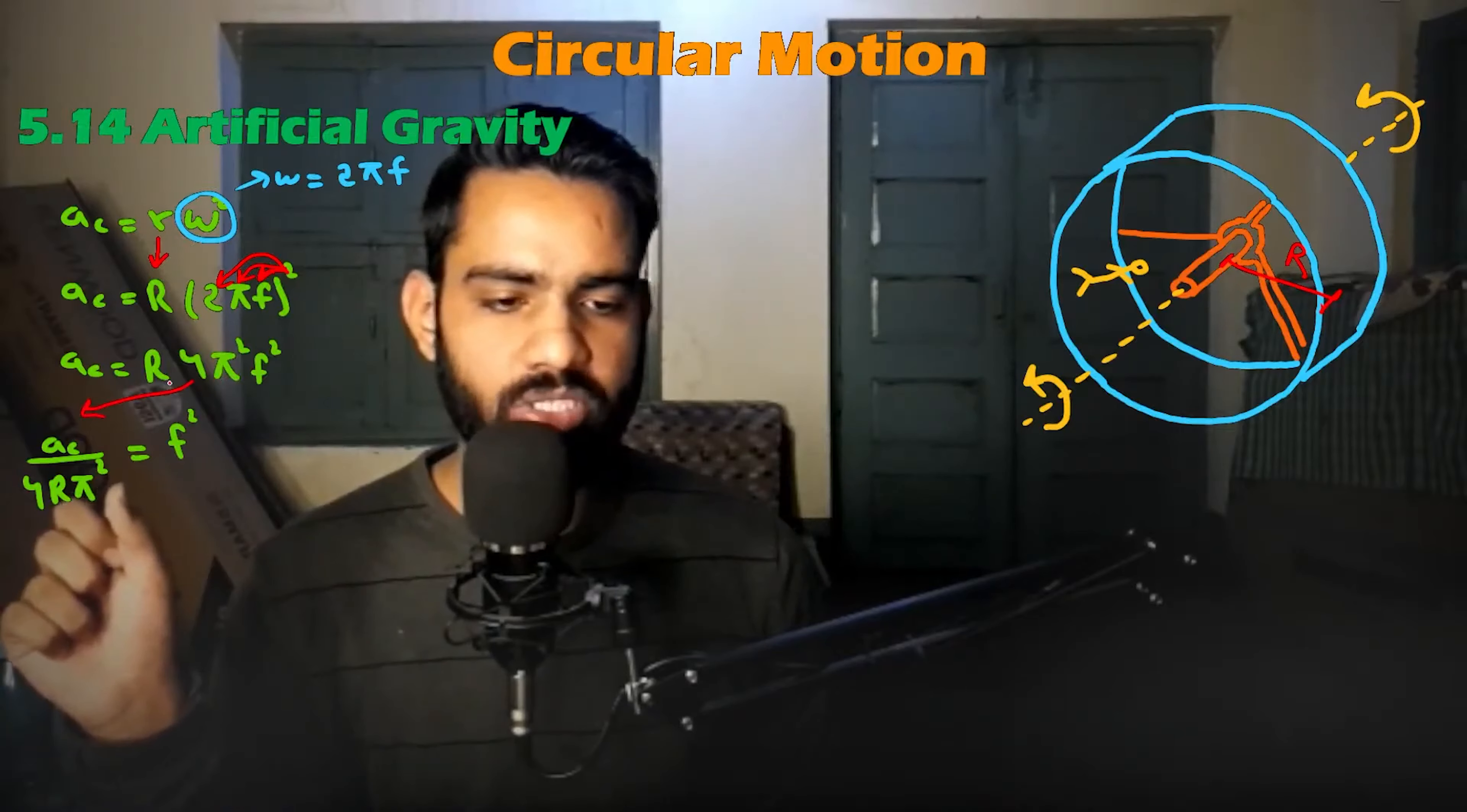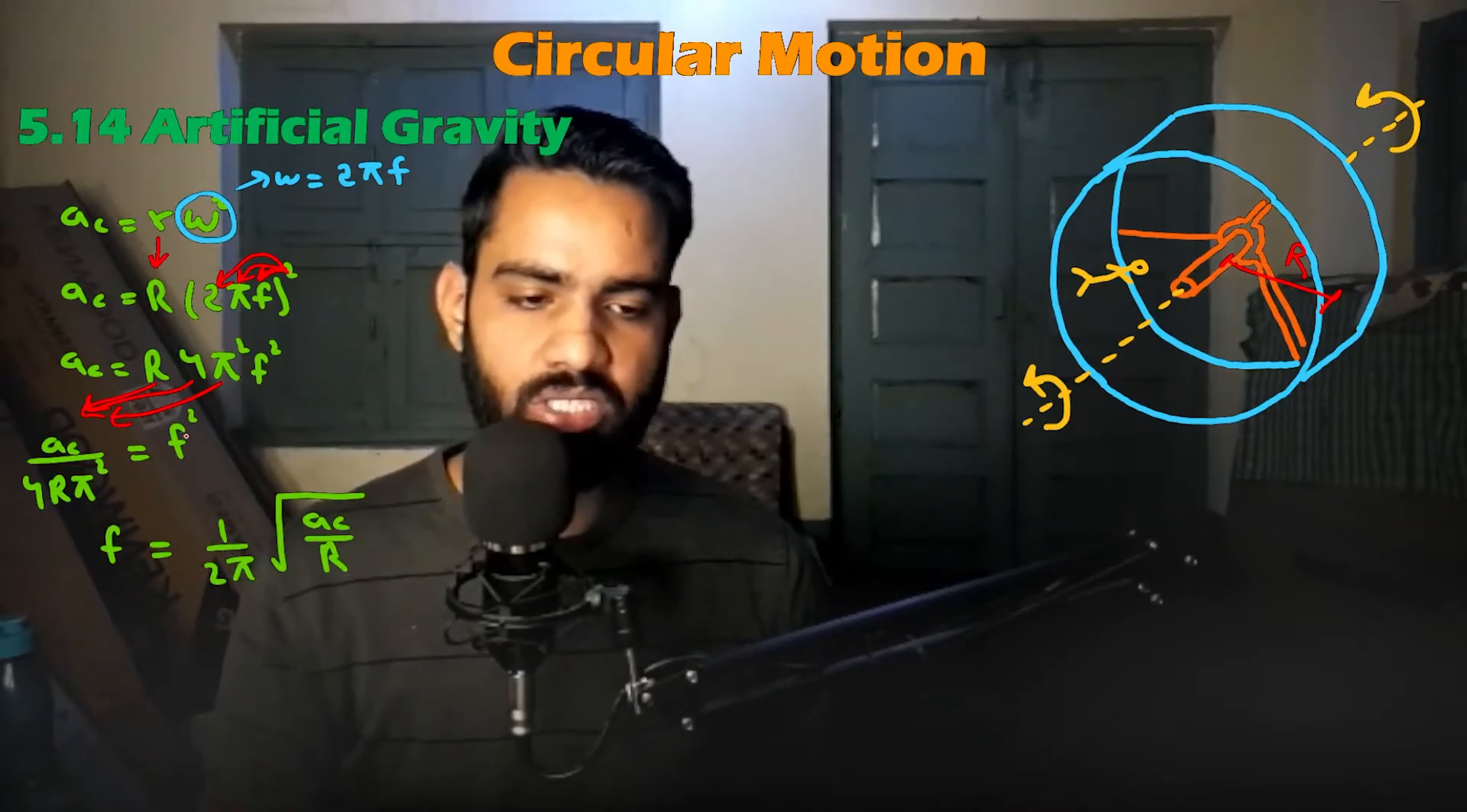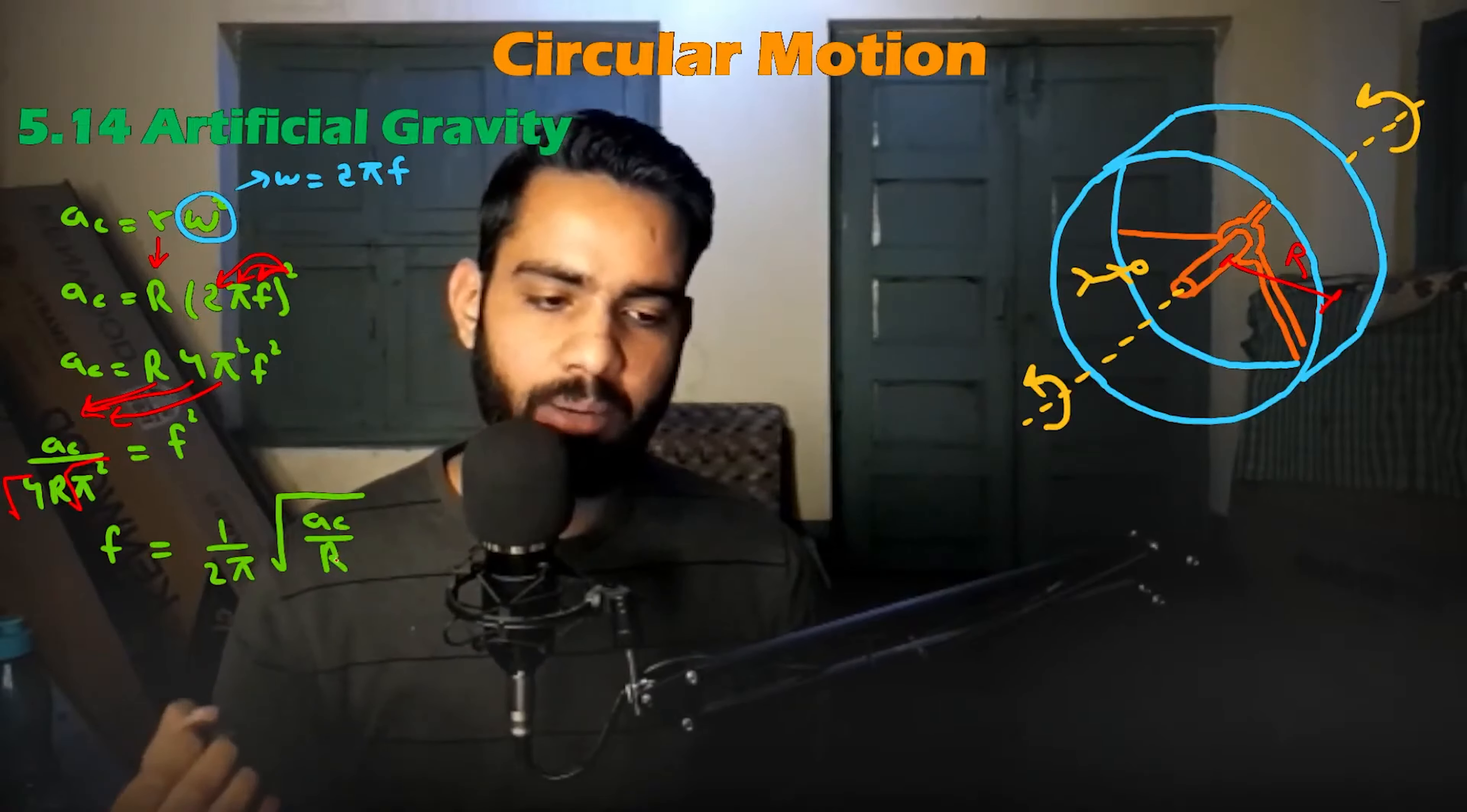So what do we do? The frequency f squared will be on the other side. So 4 will divide and pi squared will be here. After this, if we have this equation, then we take the square root.